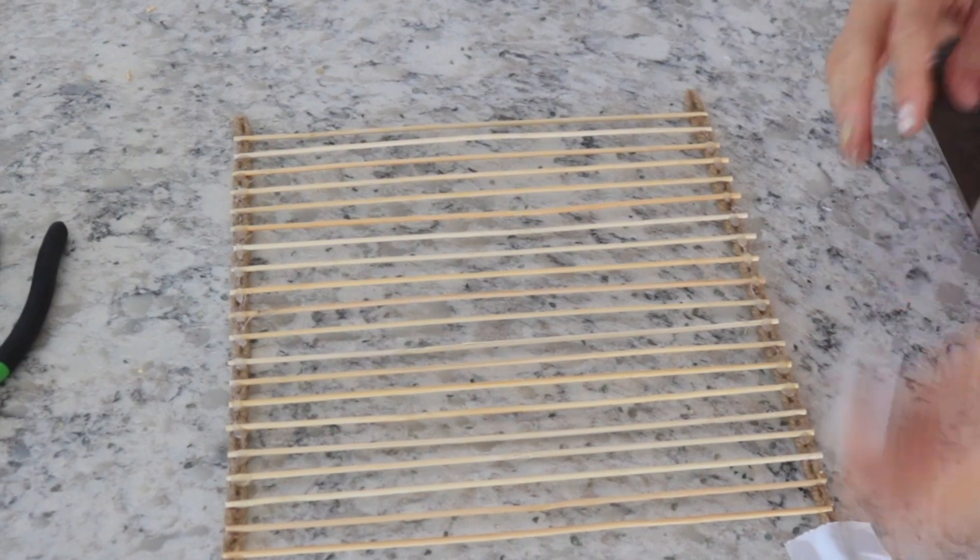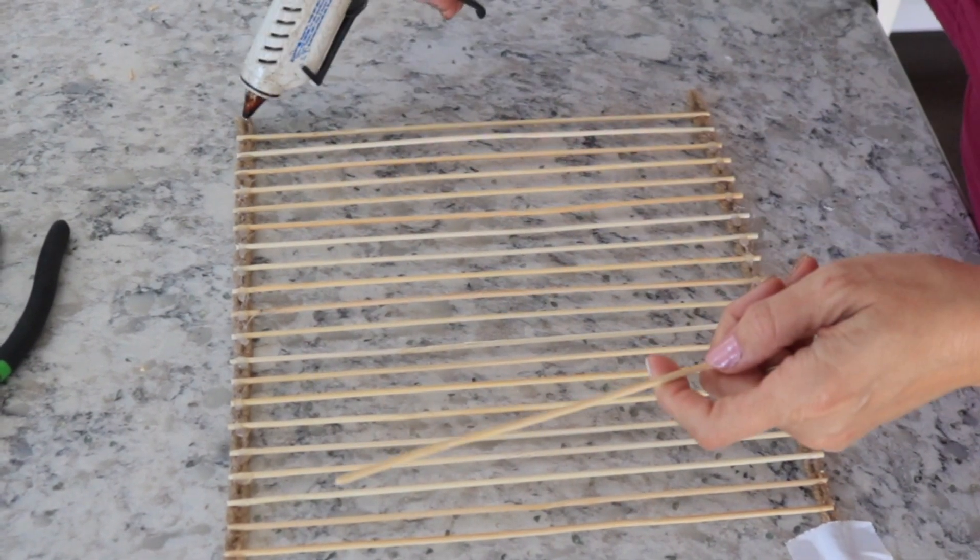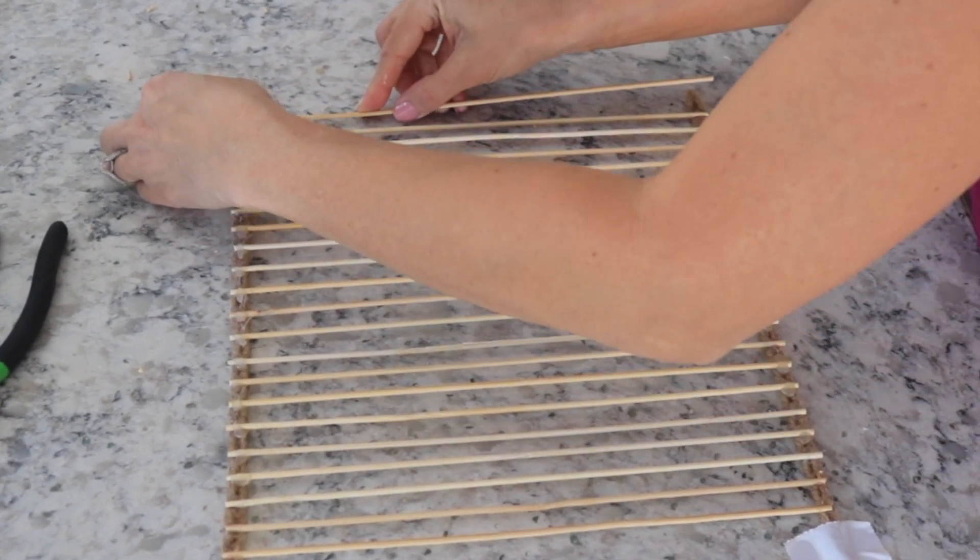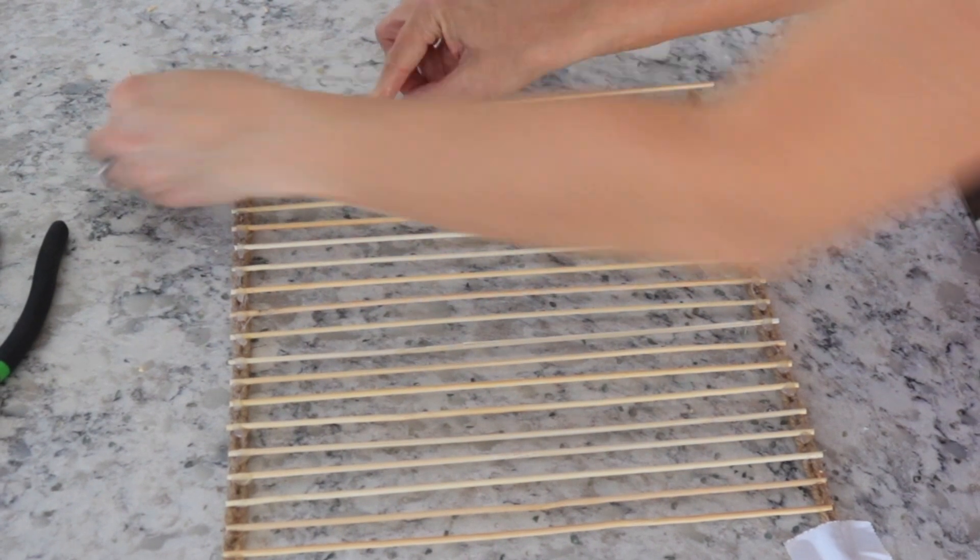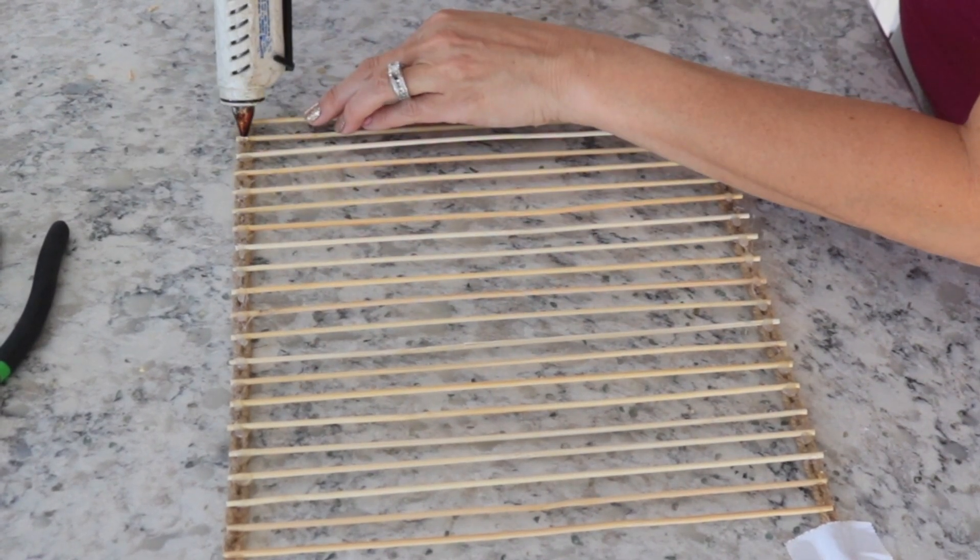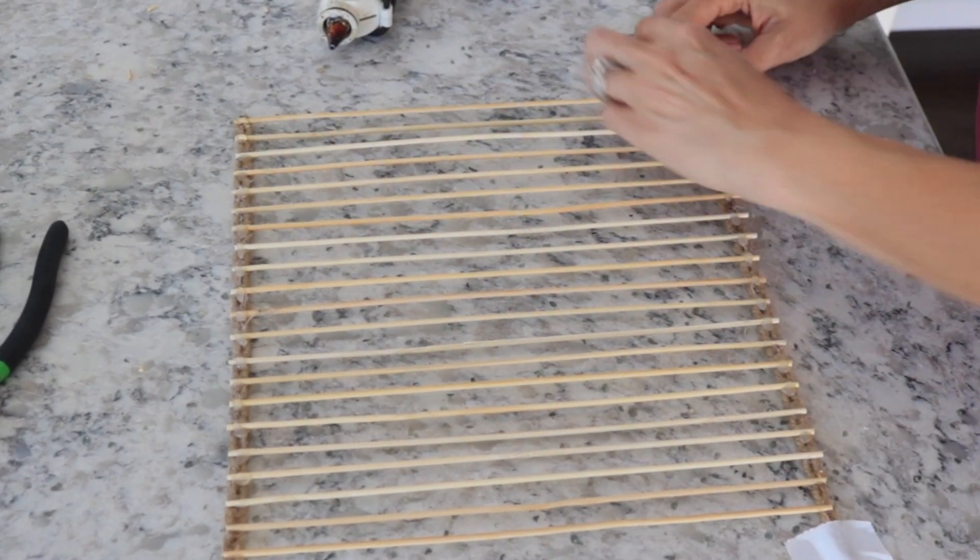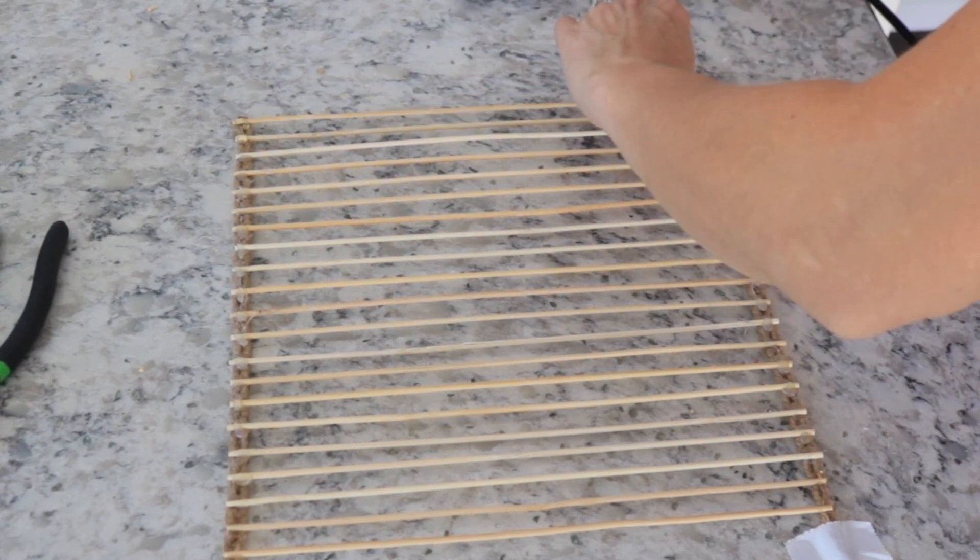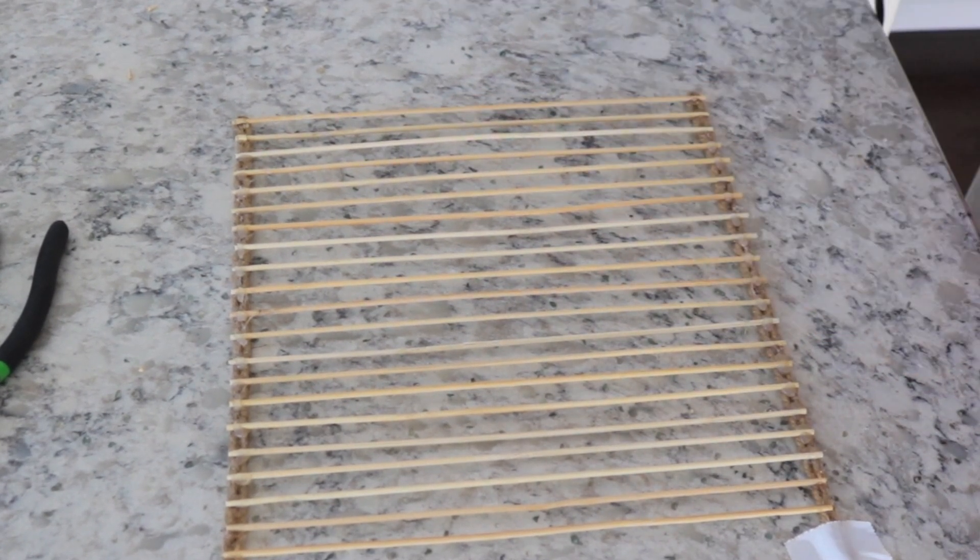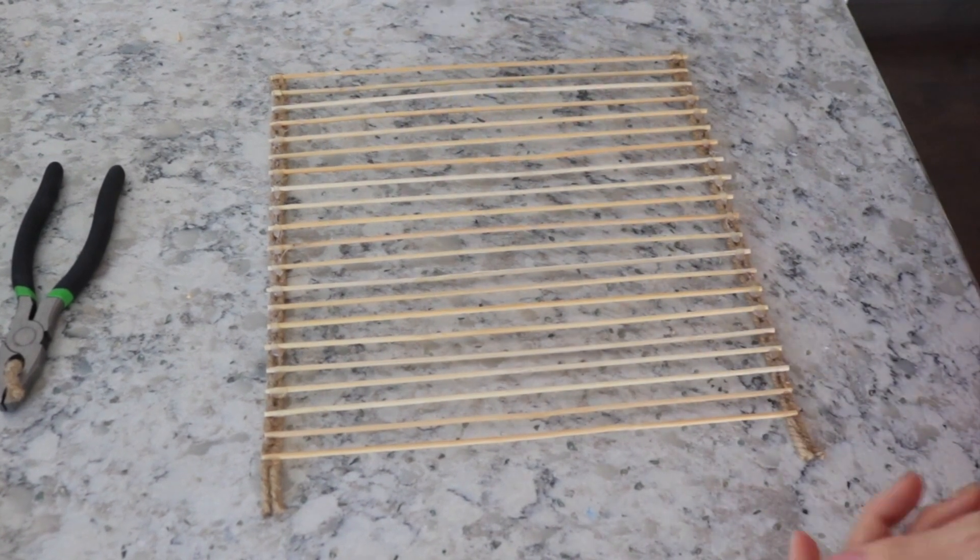Now once you get to the tape, I'm just going to remove the tape on the end and then glue one last skewer to each end. And of course, repeat it for the other side.